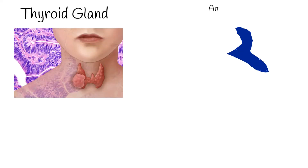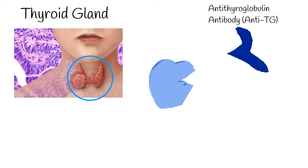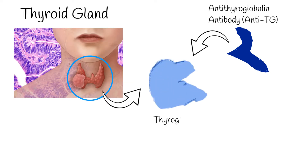Antithyroglobulin antibody, or anti-TG test, measures antibodies against a protein called thyroglobulin. The protein thyroglobulin is found and produced by thyroid cells.